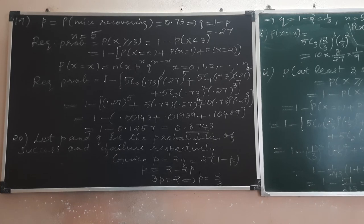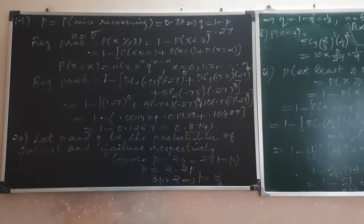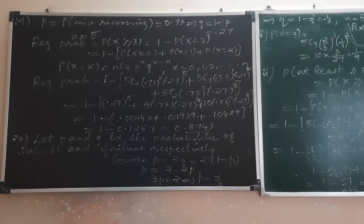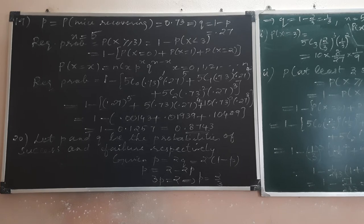Question number 20. An experiment succeeds twice as often as it fails. What is the probability that in the next 5 trials, there will be 3 successes and at least 3 successes?